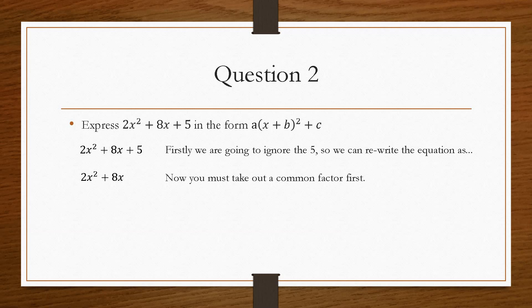But this is the extra step. We have to take out a common factor first because the bracket in here cannot have a value attached to the x directly. It must be x and then a number. So that's why we have to take out the value of 2. And this gives us what we had in the previous question.